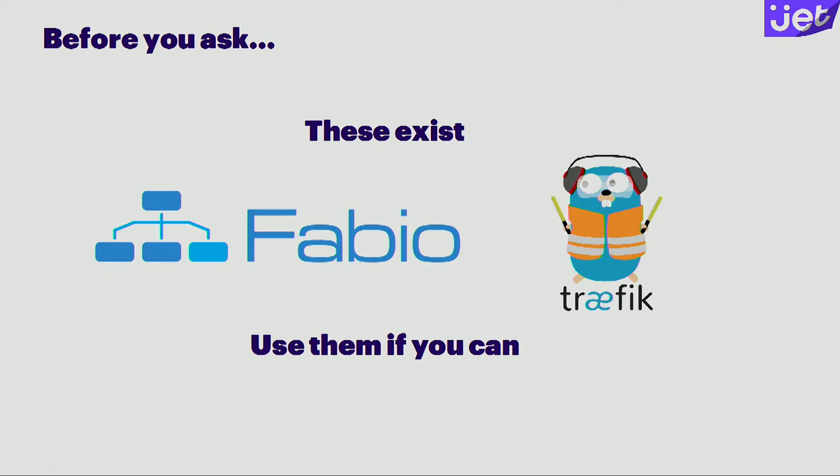Before you ask, I caution you — buyer beware — before you try to implement any of the things I'm about to tell you. These things do exist and are a lot better than what I'm going to tell you to do right now. Please, if you have the capability, use one of these. I just found out that Fabio was recently acquired by HashiCorp, so maybe we'll get some integration in Nomad. But if you can't use those, or if you have to use something like HAProxy, some of these concepts are also applicable to those older tools. But let's talk specifically about Nginx.